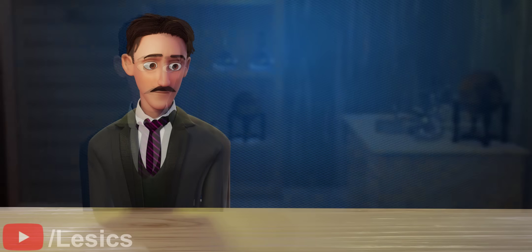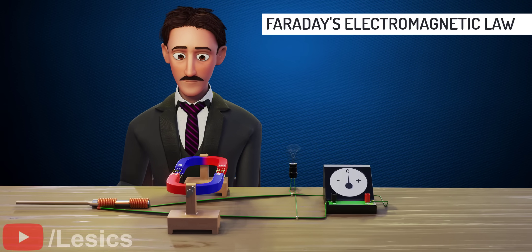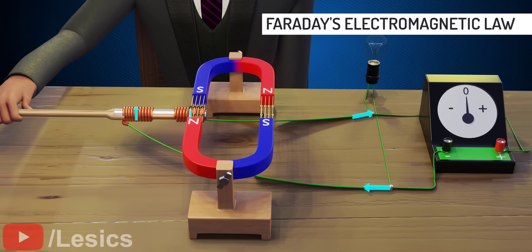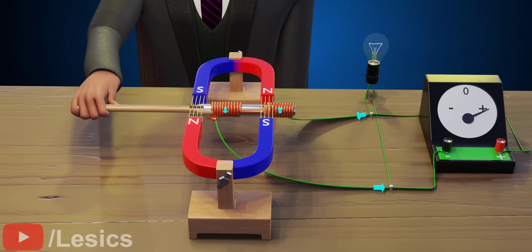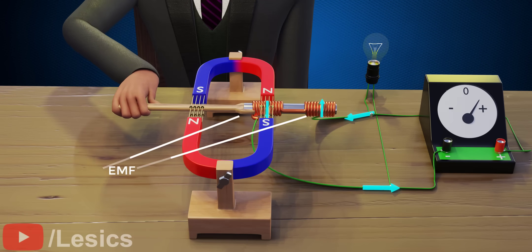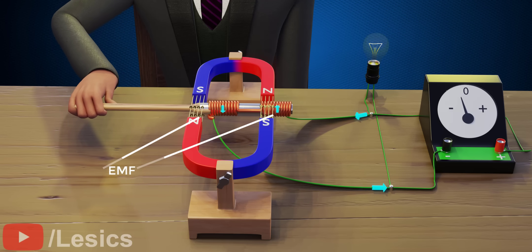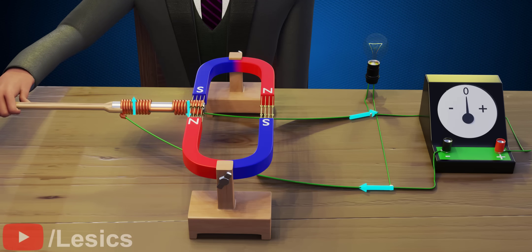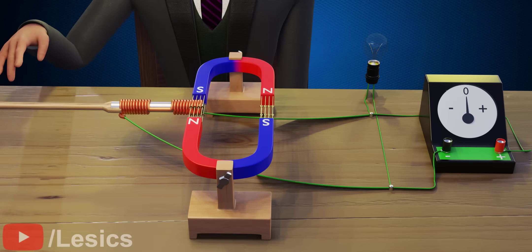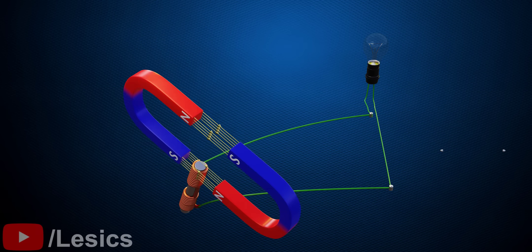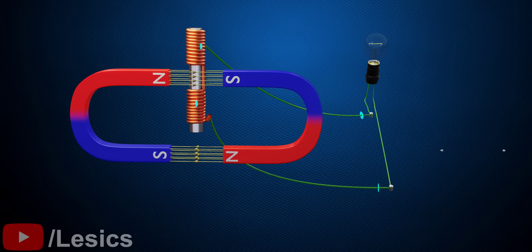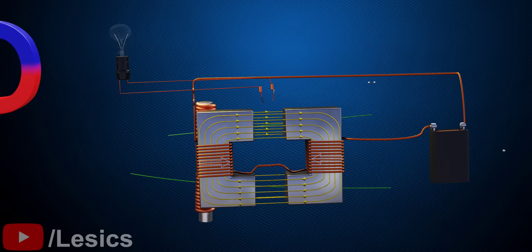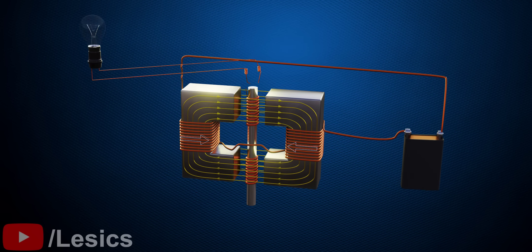The foundational principle of electricity generation was put forth by the genius mind of Michael Faraday, who discovered that when you move a copper coil back and forth inside a magnetic field, an electromotive force develops across the conductor. As the circuit closes, the current starts to flow into the coil. Nikola Tesla replaced the permanent magnets with an electromagnet, which is how he designed his electrical generator.